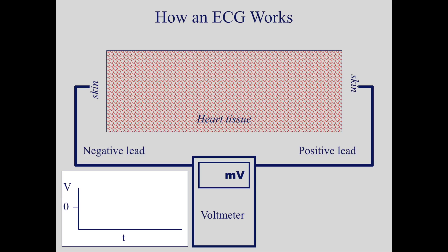So how does an ECG work? A negative and positive lead are attached to the skin of the individual to monitor the electrical current in the heart tissue with a voltmeter. When there is no electrical stimulus and current flow, there is no difference in the membrane potential and the voltmeter reads zero.